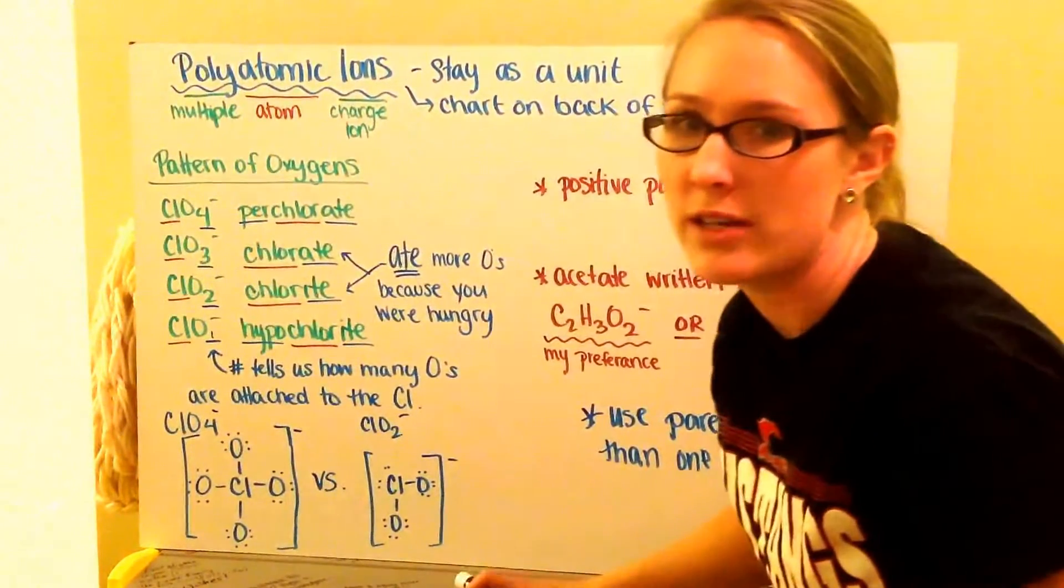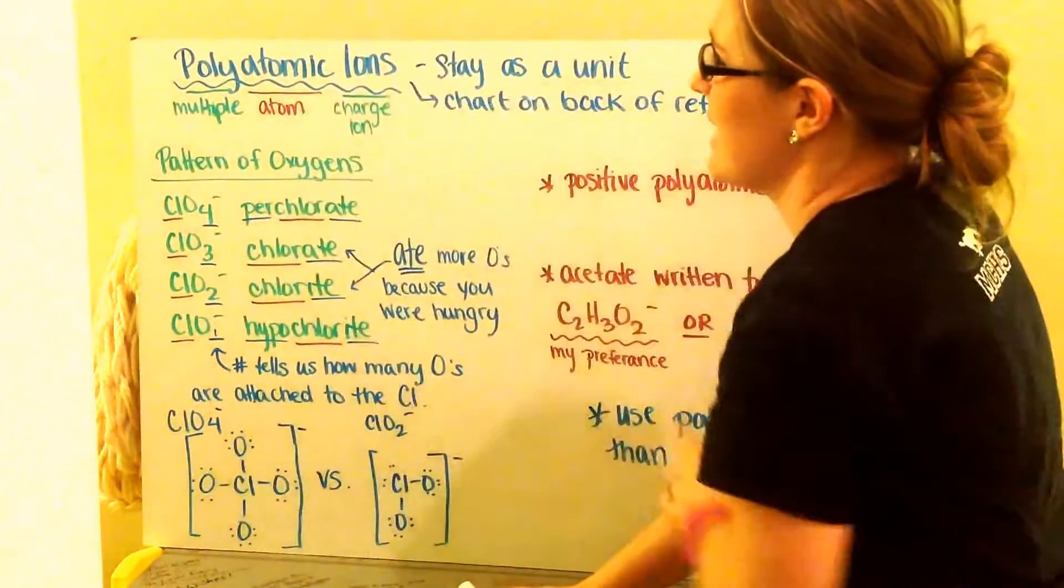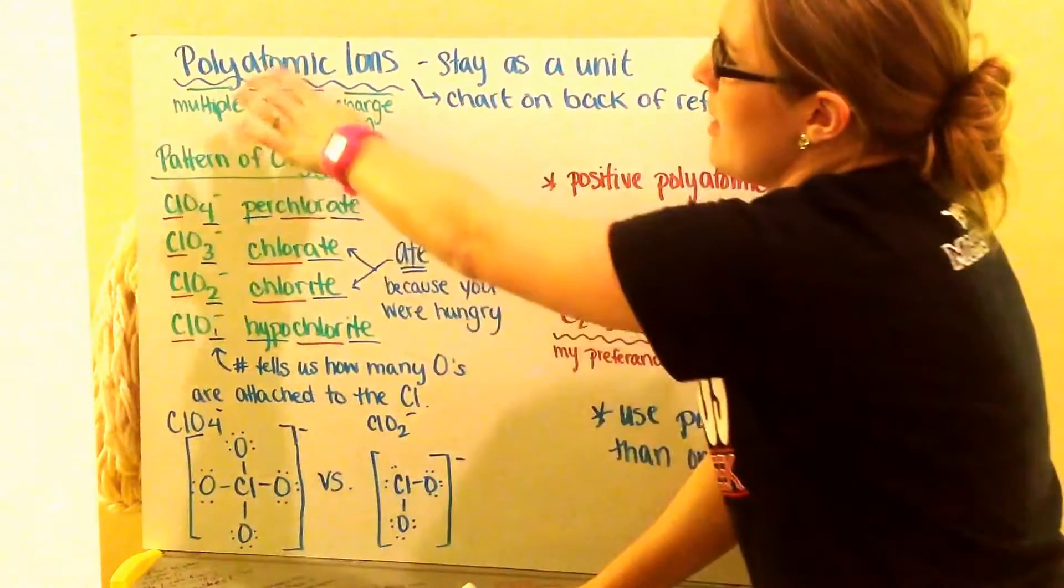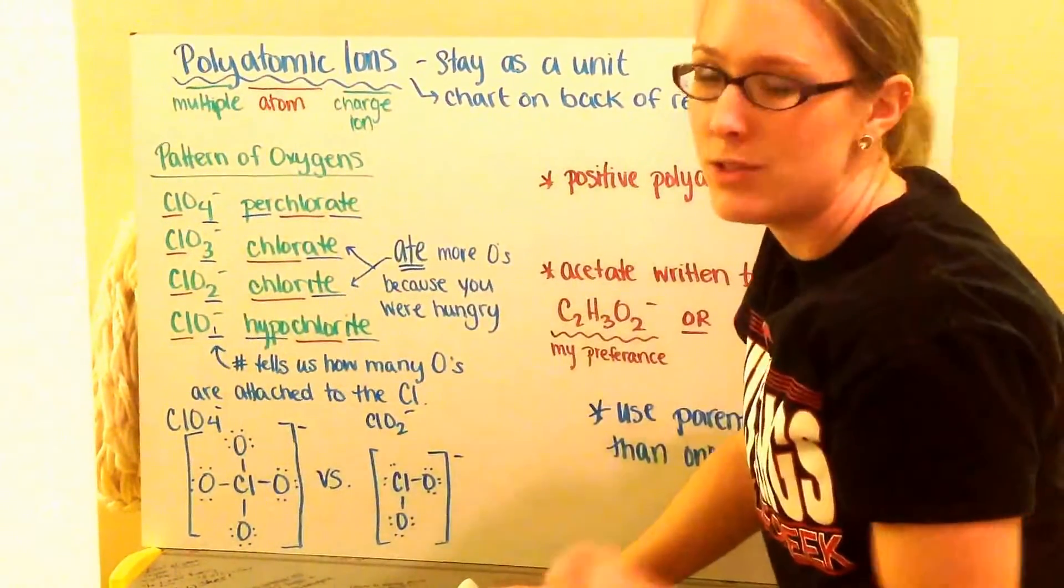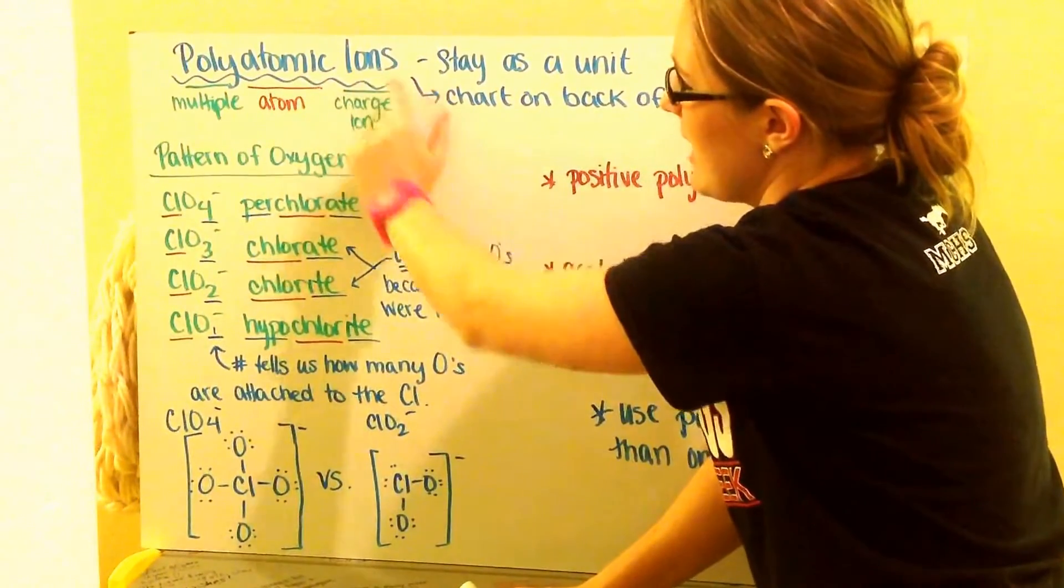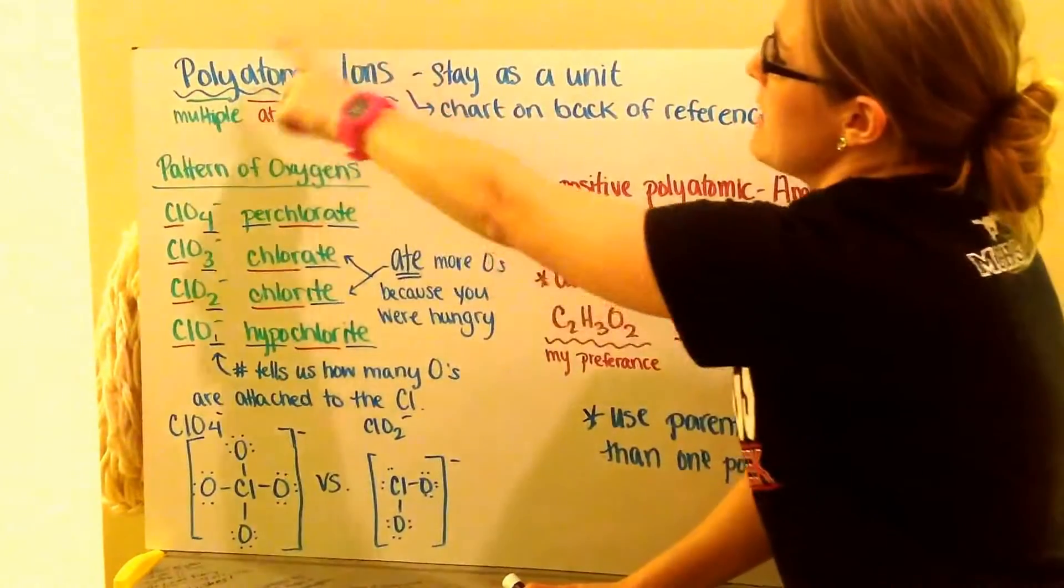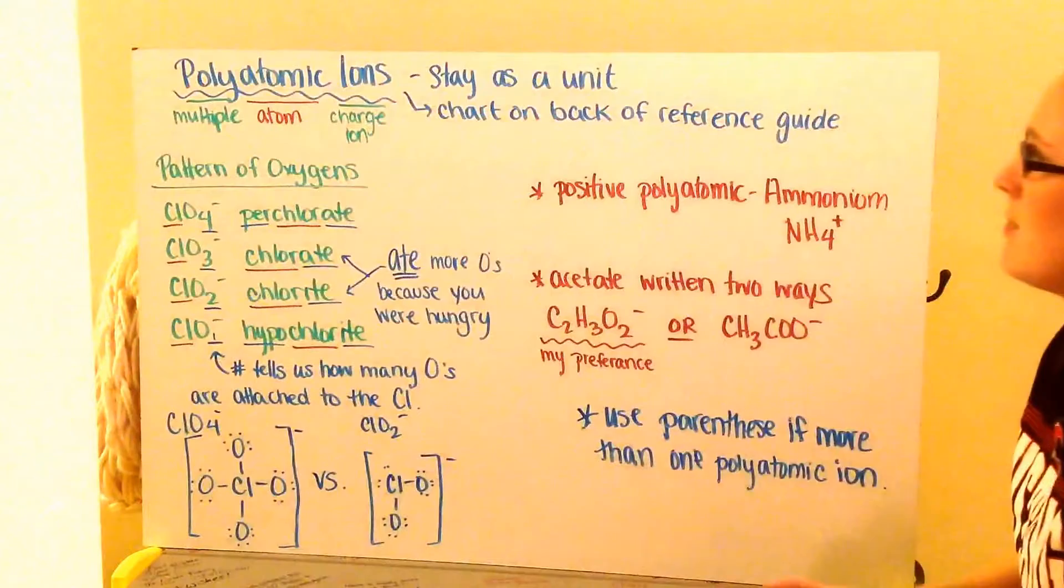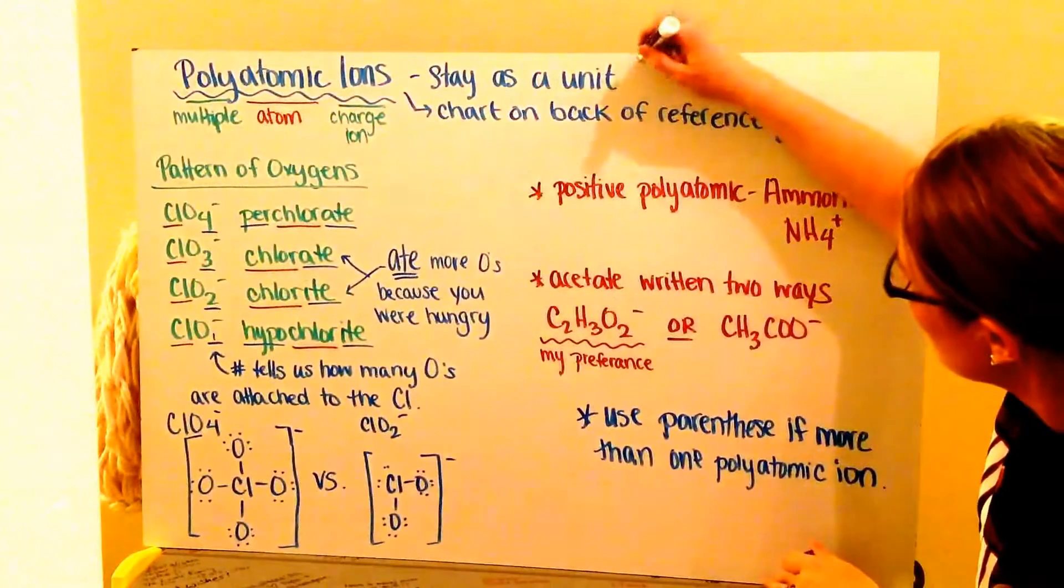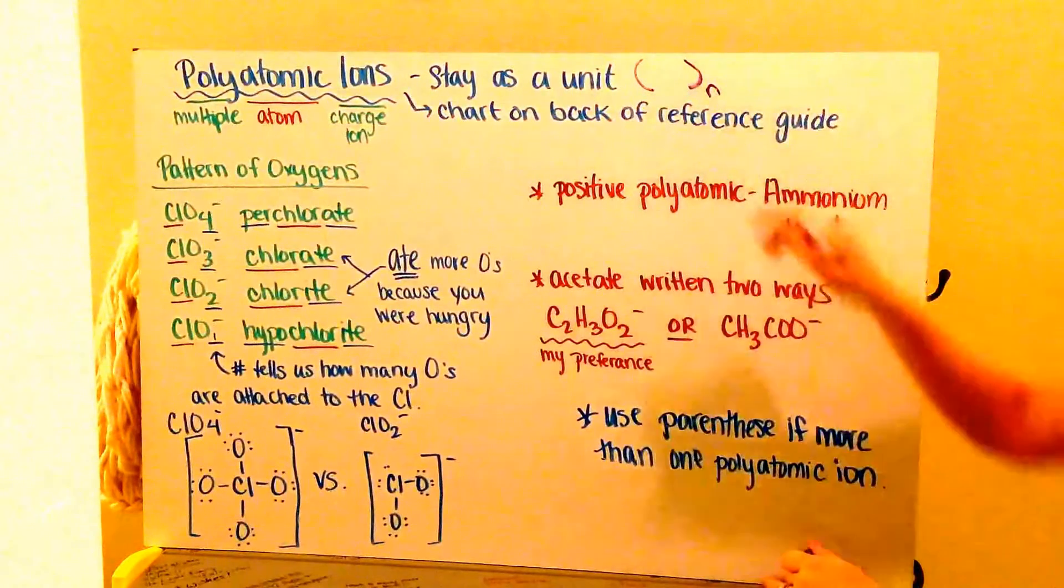So besides the regular non-metal transition metals, I can also have polyatomic ions. Now polyatomic, the name tells you what it is. Poly means multiple. Atomic is atom. And ions means this is a charged ion. These polyatomic ions stay as a unit.